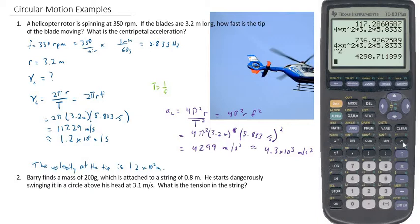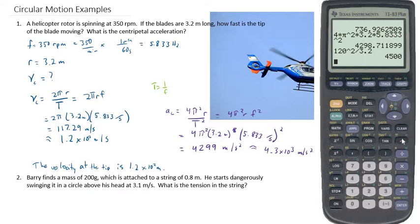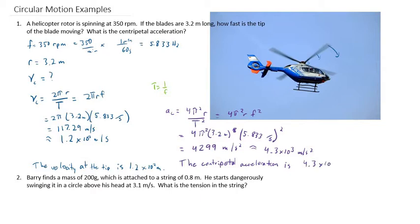Since I had about 120 as my velocity, if I quickly try 120 squared and divide it by the radius of 3.2, just a quick check, 4,500, I got 4,300, so I'm definitely close. I'm in the right ballpark. So now I can say the centripetal acceleration is 4.3 times 10 cubed meters per second squared.